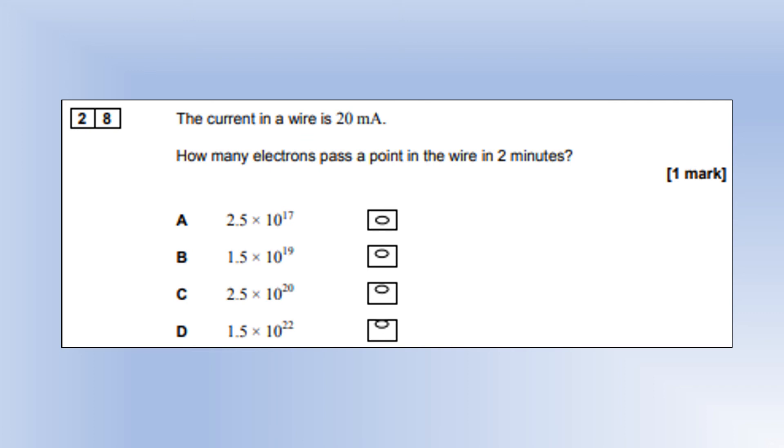The current in a wire is 20 milliamps. How many electrons pass a point in the wire in two minutes? First, we work out the charge that's passed through using Q equals IT. One electron has the charge of 1.6 times 10 to the minus 19. And we can figure out the number of electrons is option B.